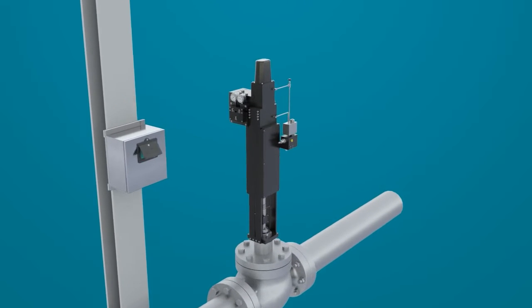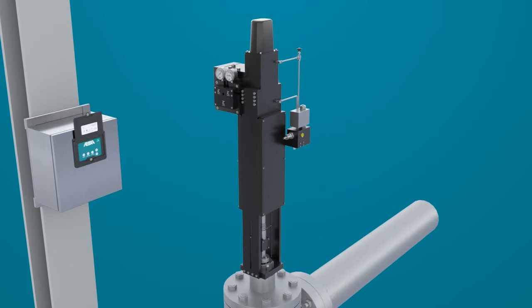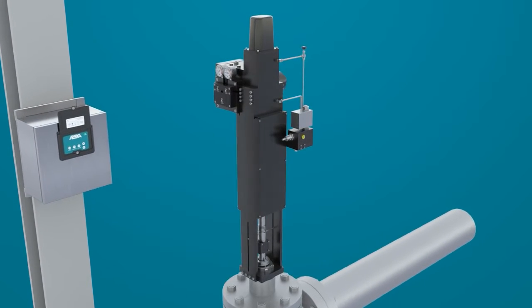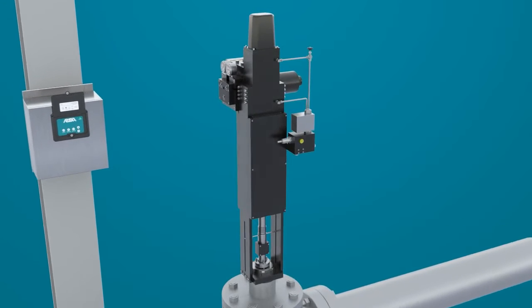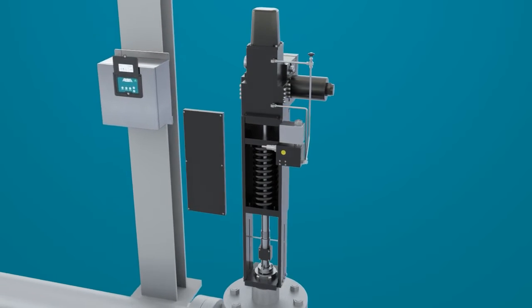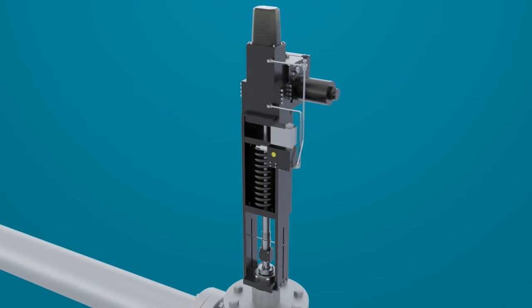Spring fail-safe positioning is an option available for REXA linear and rotary actuators. This option provides a mechanical means to reach a fail-safe position in the event the actuator loses main power or a trip condition occurs.